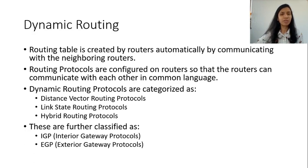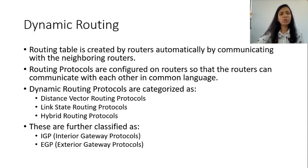Next is hybrid routing protocol. The hybrid routing protocol is a combination of distance vector and link state routing protocol, taking the good features of both to create a new class. An example of distance vector routing protocol is RIP or IGRP. An example of link state routing protocol is OSPF. An example of hybrid routing protocol is EIGRP. As part of the CCNA course, we will look at RIP, OSPF, and EIGRP protocols. These protocols are further classified as interior gateway protocols and exterior gateway protocols. An example of IGP is OSPF or RIP, and an example of EGP is BGP, or Border Gateway Protocol.